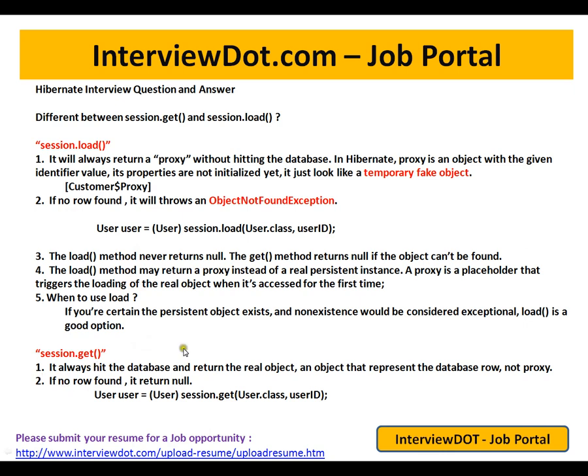The get method always hits the database and returns a real object — an object that represents the database row. It will not return a proxy at all. It will either return the object or return null if the object is not found. The syntax is session.get(ModelClass, userId). It returns the real object immediately, or null if it is not able to find the object in the database table.